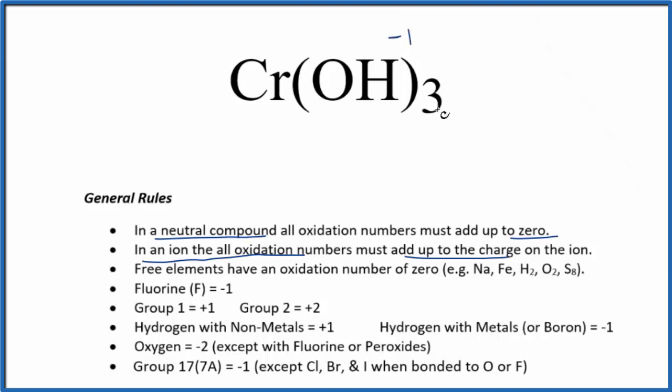Since we have three of these, three times minus one is three minus, the chromium has to be plus three. So the oxidation number on the chromium in Cr(OH)₃ is plus three.